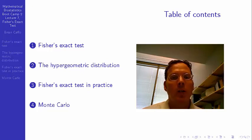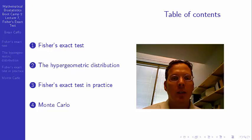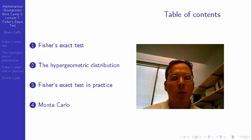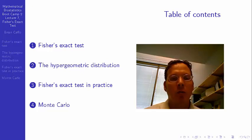We'll also talk about how you can execute Fisher's Exact Test using Monte Carlo. Fisher's Exact Test is a historically very famous test, and it's going to be one of the first instances where we're able to test equality of binomial proportions using a formal exact test rather than relying on asymptotics.